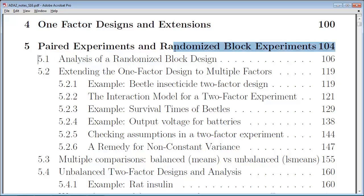The first section here is to extend that idea for when it is important to block. There's a saying: block what you can, randomize the rest. The blocks are to control for nuisance variability that you can't control, but that you can keep track of.